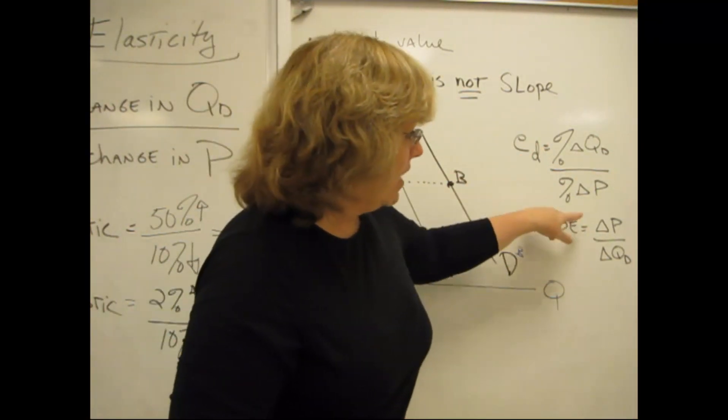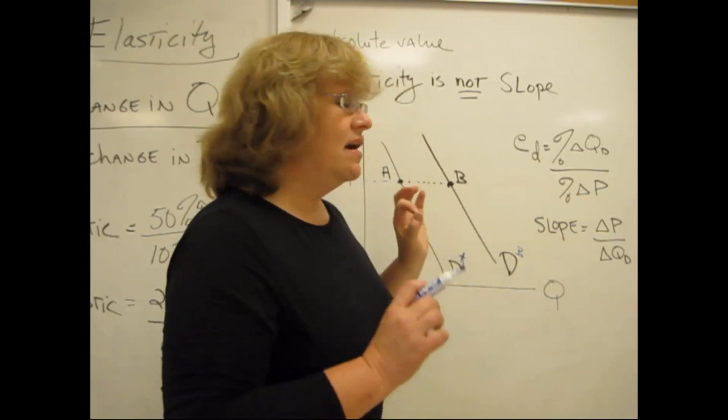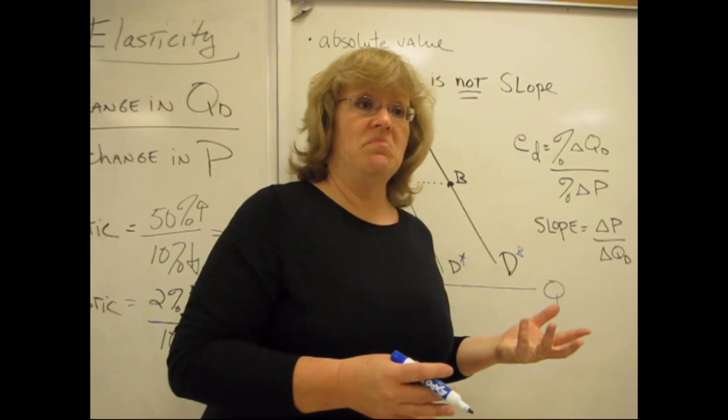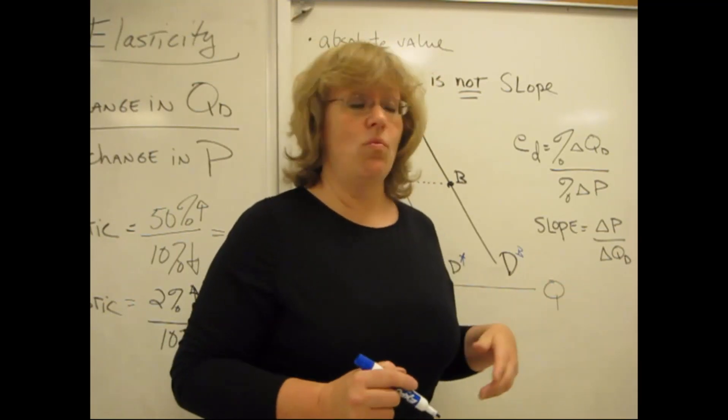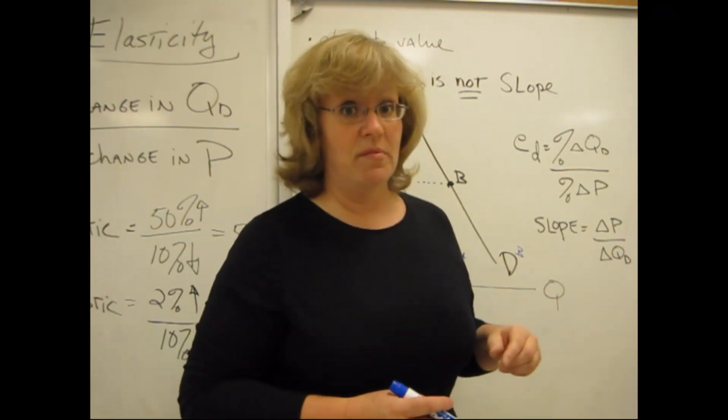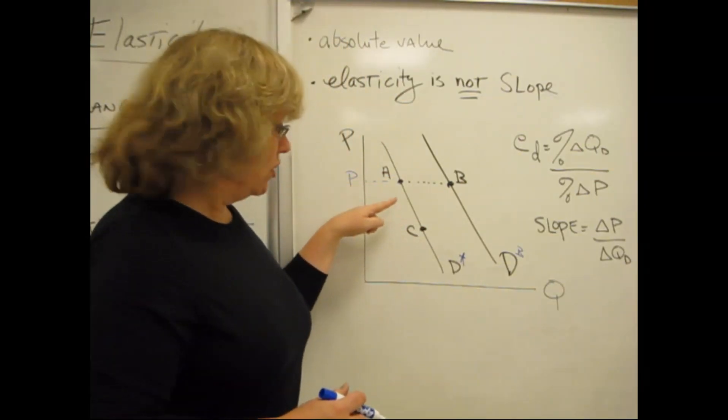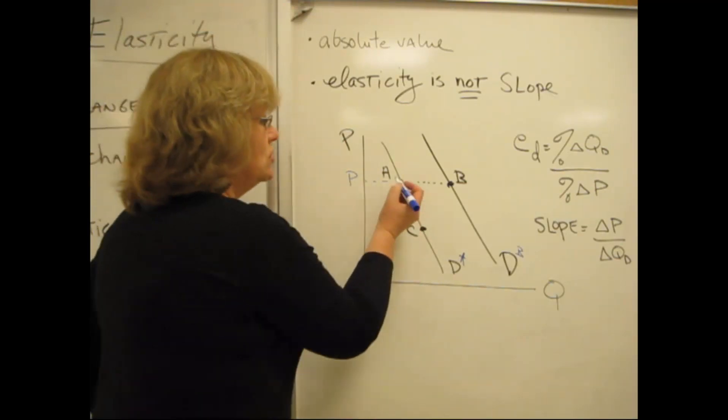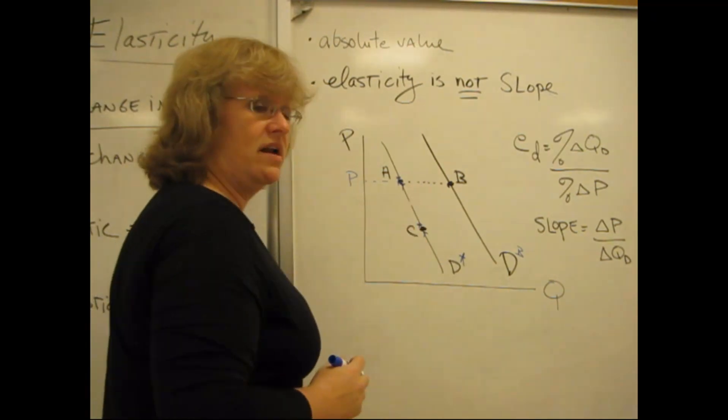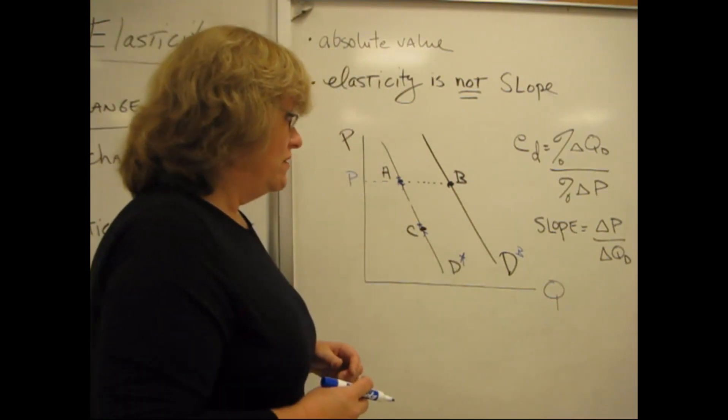Notice a couple of things. One, price is in the denominator here, it's in the numerator here. Quantity is also reversed. But the bigger, more important thing is that the slope simply talks about the simple change. The price change might be from nine to ten dollars. Price change there would be one. Here though, it's percentage change, not simple change. And the percentage change is a fundamentally different animal. So, in that case, the slope here is identical at point A and point C. But the percentage changes around these two variables, both in terms of price and in terms of quantity, would be very different. Slope and elasticity are two very different concepts.